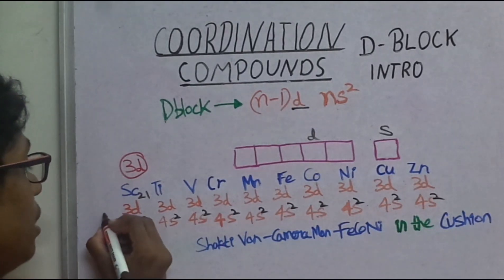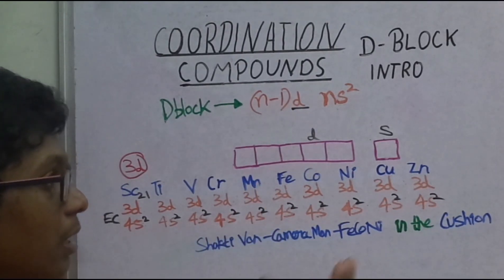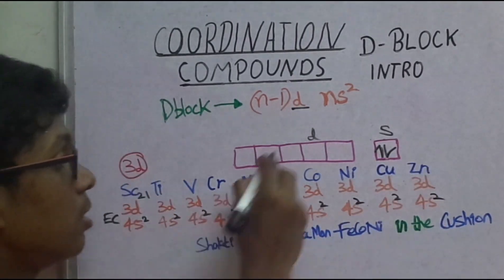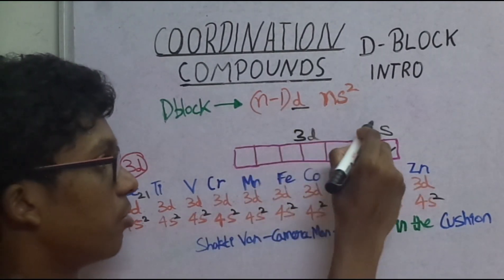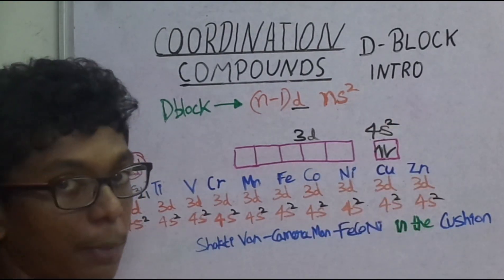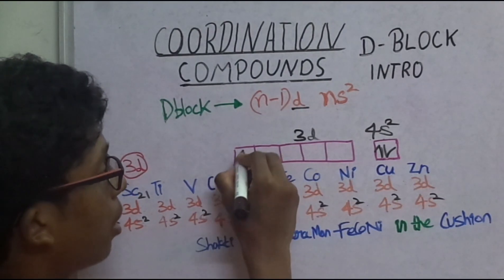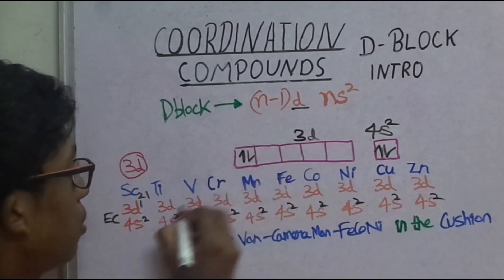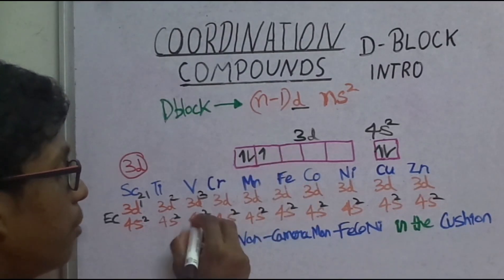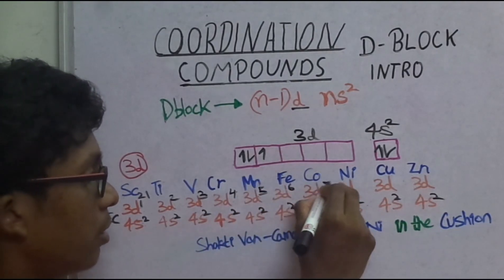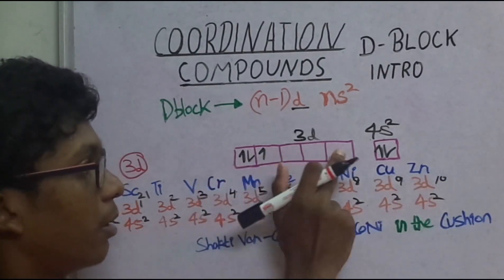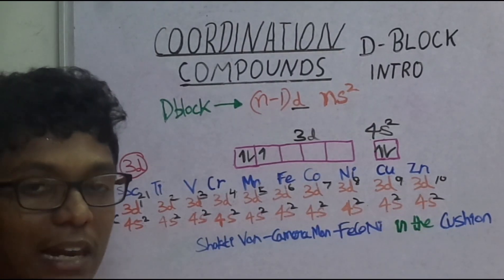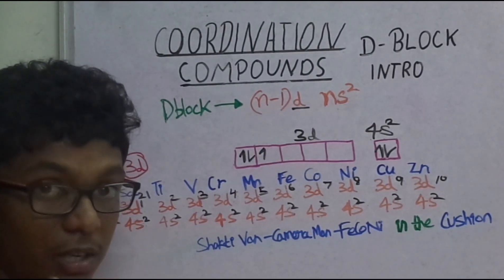Now let's look at the electronic configuration. For the 3D series, the general configuration is (N-1)D and Ns2. For the 3D series, N is 4, so it is 3D and 4S2. The D electrons fill from 3D1 up to 3D10 across the series.